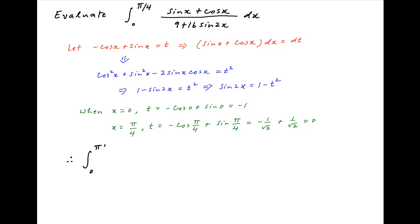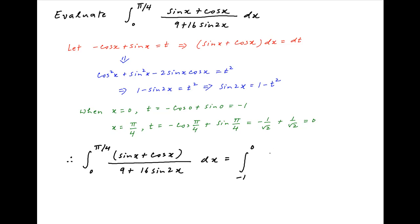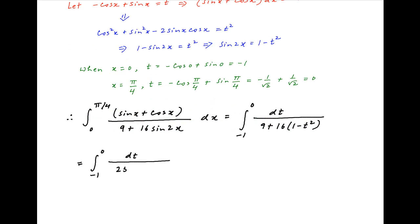Therefore the given integral from 0 to pi upon 4 of (sin x plus cos x) dx upon (9 plus 16 sin 2x) can be expressed as the integral from minus 1 to 0 of dt divided by 9 plus 16 times (1 minus t squared). This equals 1 upon 16 times the integral from minus 1 to 0 of dt upon (25 minus 16 t squared).